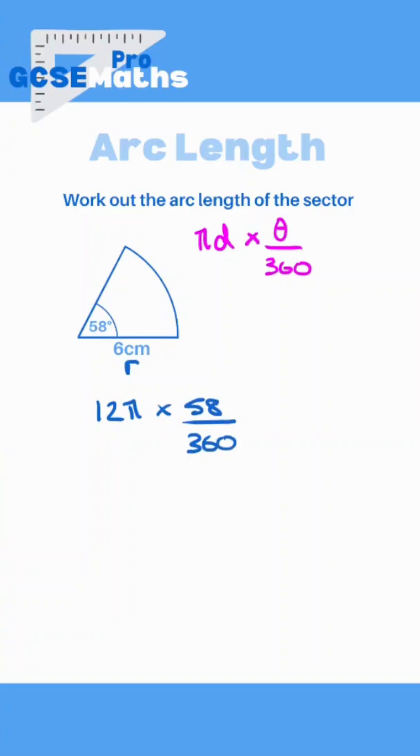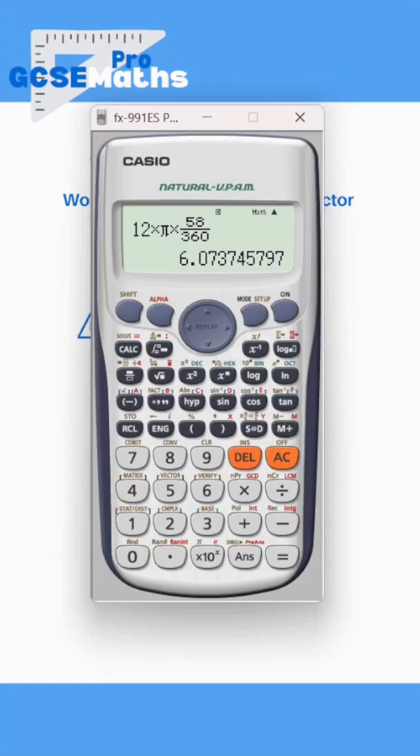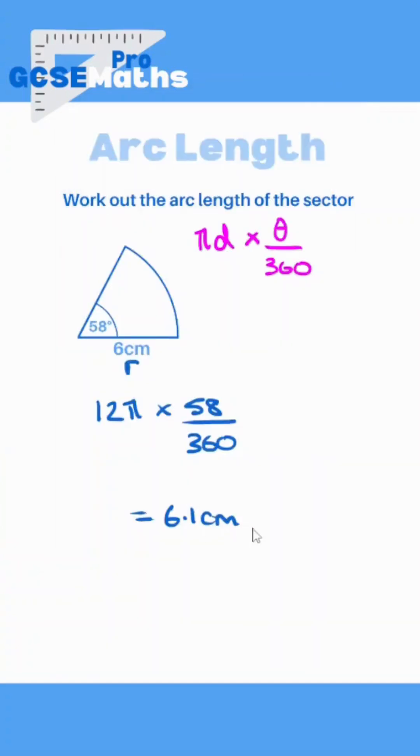And all I need to do is type that into my calculator which gives me 6.07. So to one decimal place, let's call it 6.1cm.